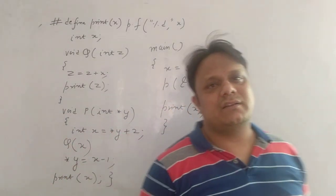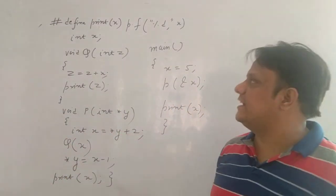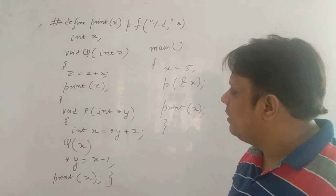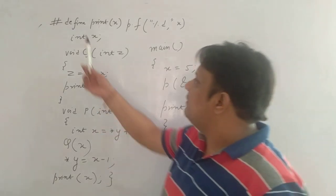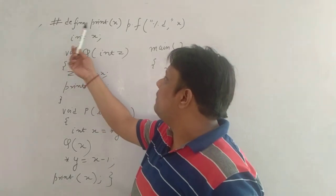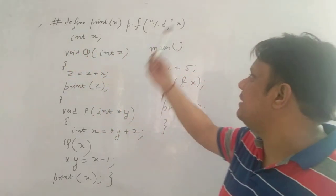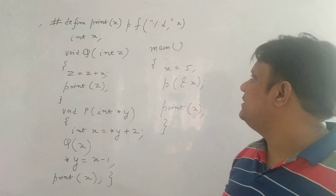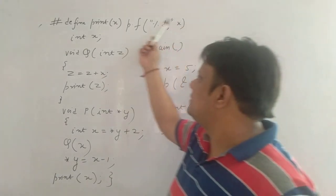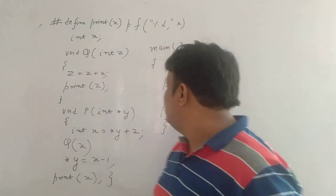Hi guys, good morning. Moving on to the next question. It's written: hash define print(x) is printf percent-d comma x. It's a macro, right?